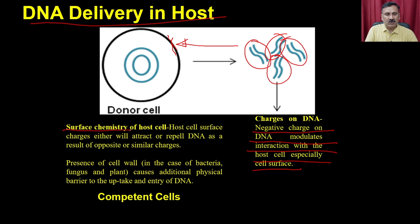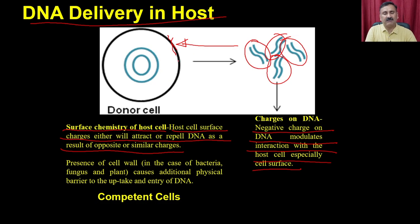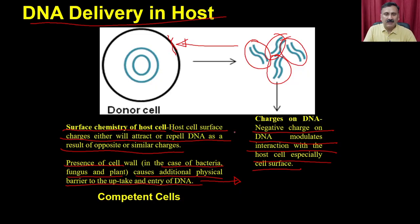The surface chemistry of the host cell will either attract or repel DNA based on opposite or similar charges — a positively charged surface attracts DNA, a negatively charged surface repels it. The presence of a cell wall in bacteria, fungi, or plants causes an additional physical barrier to cellular uptake. The entry of DNA is not a facilitated process; it has multiple barriers and hurdles that must be overcome by preparing a competent cell.